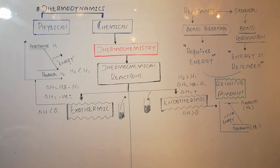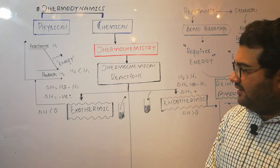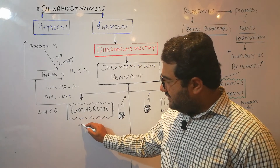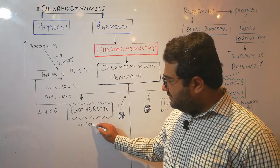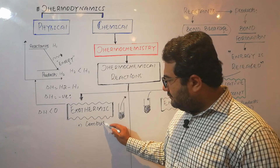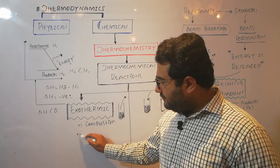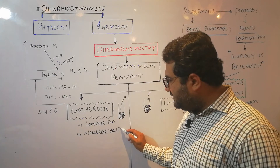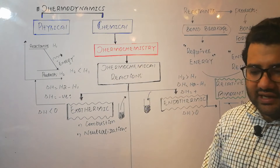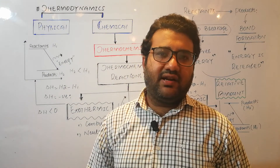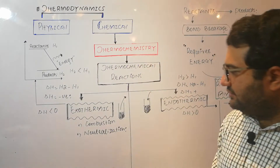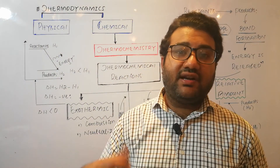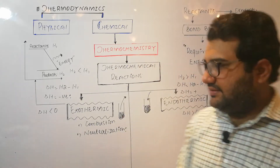Common examples of exothermic processes include combustion, which is always exothermic; neutralization, which is always exothermic; the reaction between a reactive metal and an acid, which is always exothermic; and the reaction between a non-metal and the oxide of a metal, which is also exothermic in nature.